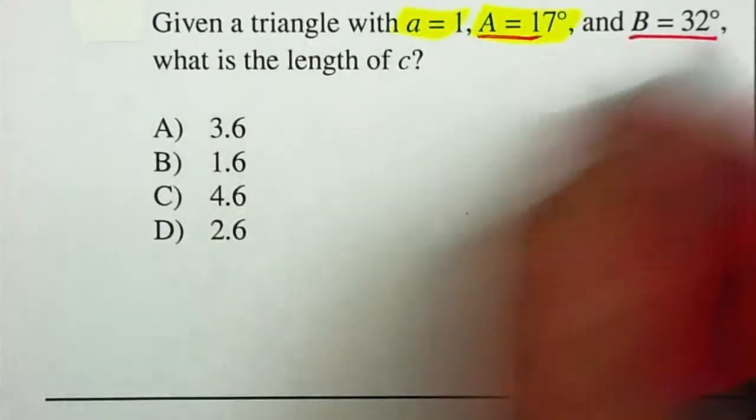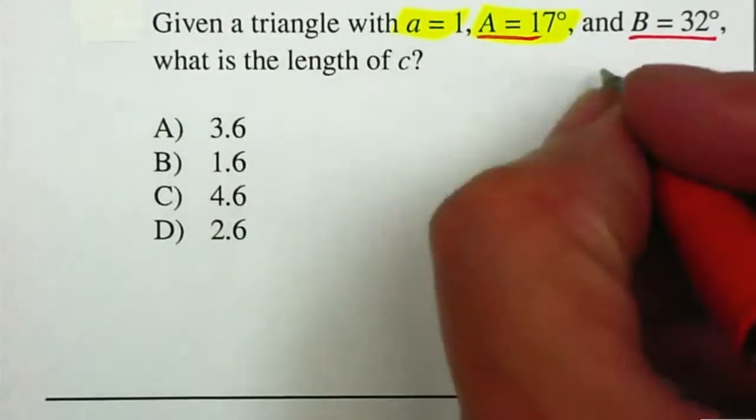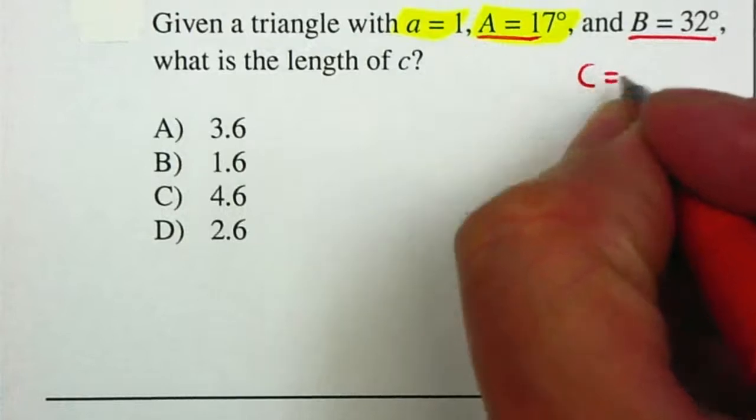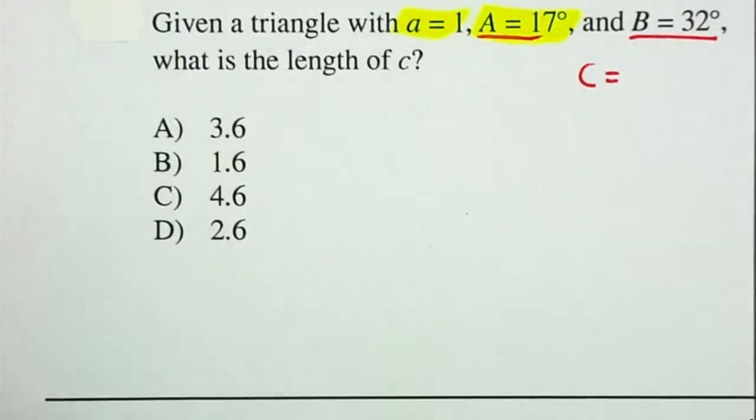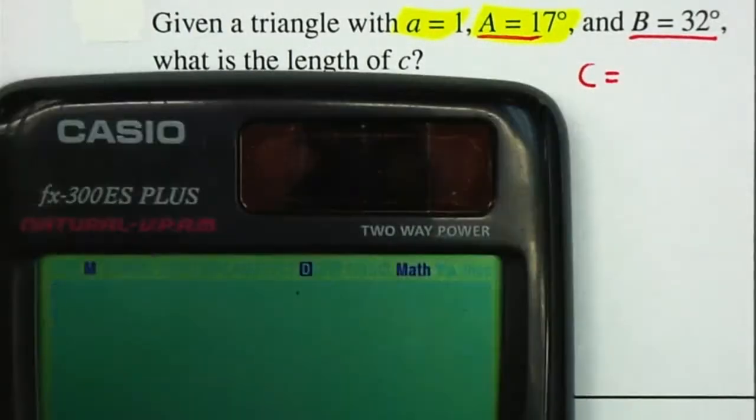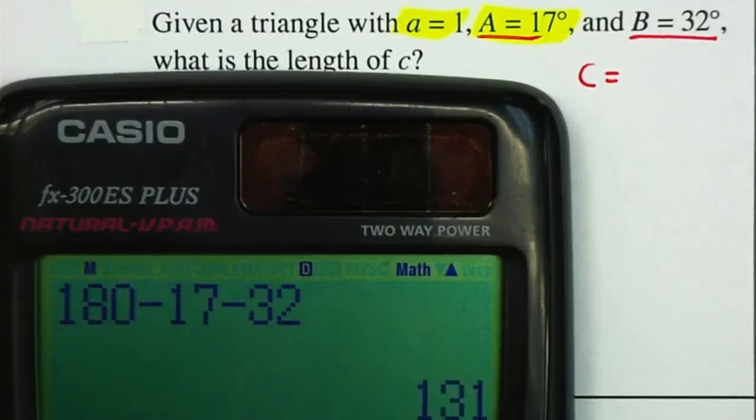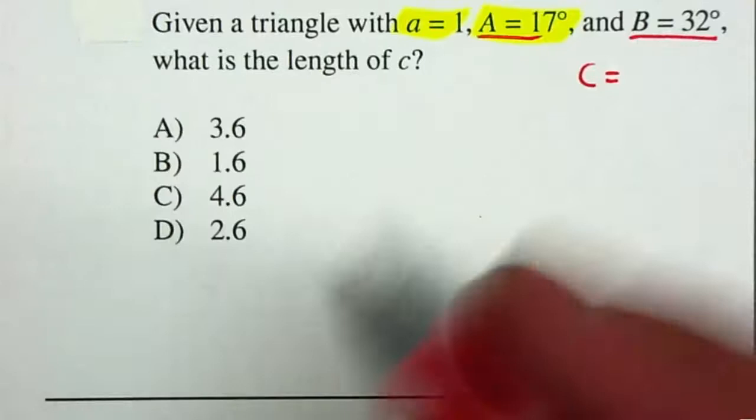They give you two angles, so therefore we can find the third angle because we know that all three angles will be equal to 180. So therefore I'm going to place 180, I'm going to subtract 17, I'm going to subtract 32. So therefore angle C will be 131 degrees.